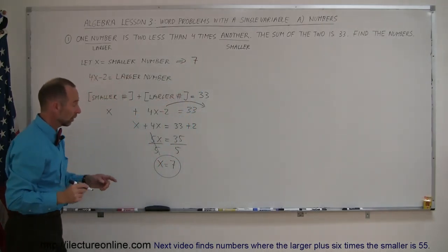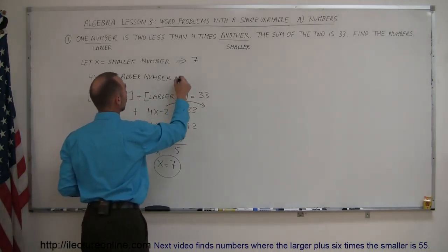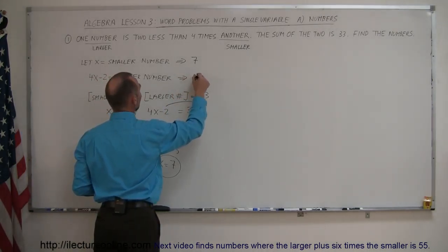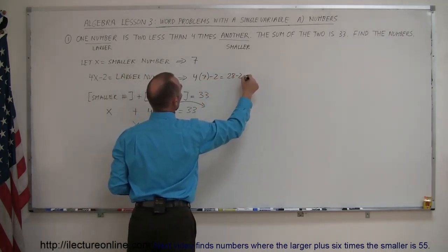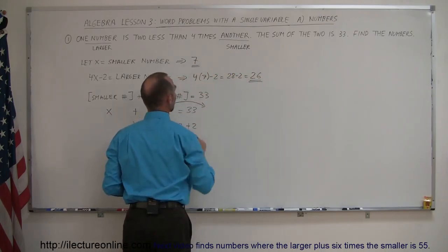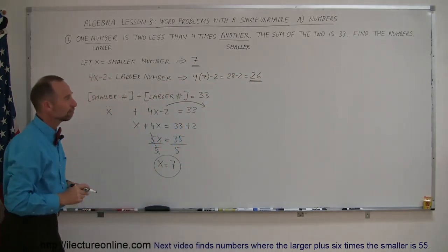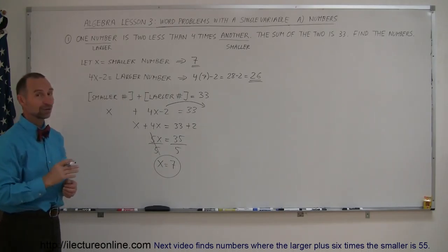What about the larger number? Well, the larger number is 4 times 7 minus 2, so this is equal to 4 times 7 minus 2, which is 28, minus 2, which is 26. So the larger number is 26, the smaller number is 7. And that's how you do that one. We'll have lots more examples for you, so stay tuned.